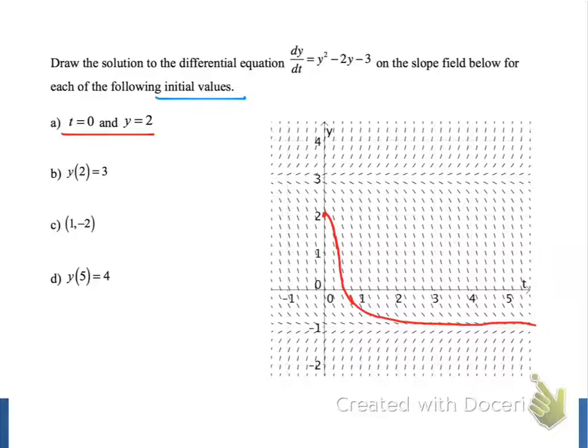We can also follow this current backwards as t decreases, and so when we do that, we see that our y value increases and it gets closer to y equals 3. This red graph that we've just drawn is the unique solution to the differential equation that passes through the point 0, 2.